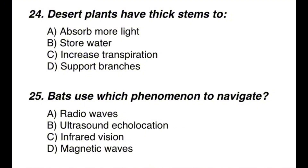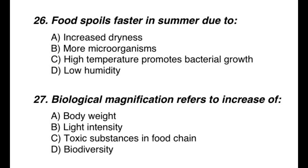Question 24: Desert plants have thick stems — the correct option is B — for storing water. Question 25: Bats use which phenomenon to navigate? The correct option is B — ultrasound echolocation. Question 26: Food spoils faster in summer due to — the correct option is C — high temperature promoting bacterial growth.